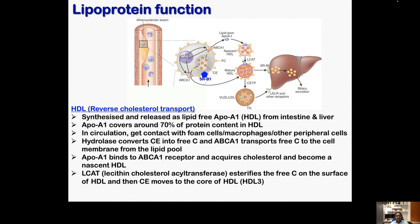An enzyme called lecithin cholesterol acetyltransferase (LCAT) then esterifies the free cholesterol. The collected free cholesterols are esterified using fatty acids, and when esterified they become non-polar in nature and move to the interior of the particle. When they go inside, the HDL becomes more mature, because the non-polar core can pack a large amount of cholesterol ester. The mature HDL then continues collecting more cholesterol through other channels called ABCG1 and SRB1, from the target cells.